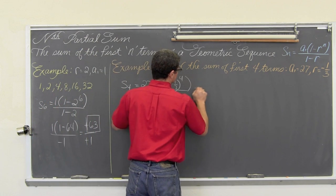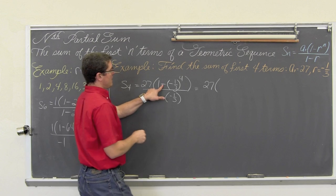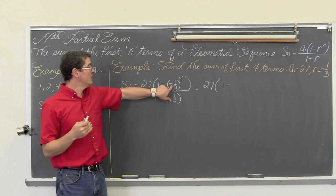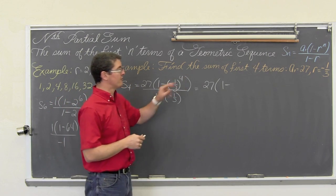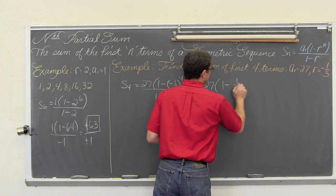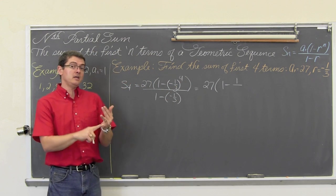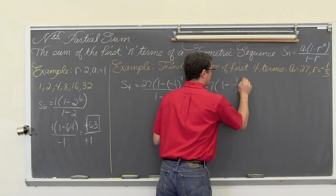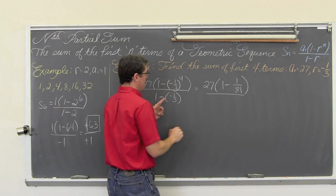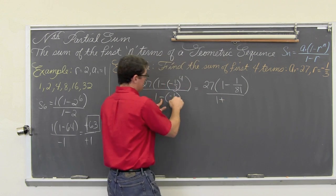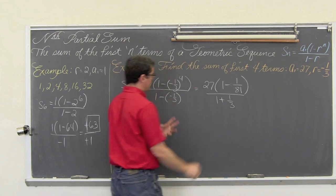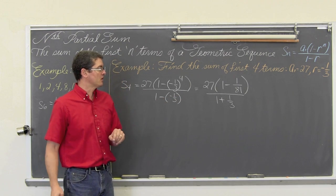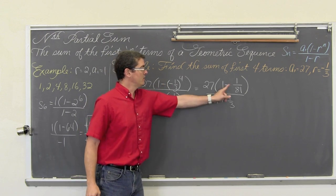So we are going to have 27, over 1 minus, I am not going to cancel out those negatives because I have to do my exponent first. So we have 1 to the fourth, which of course is 1, and then 3 to the fourth is 81, over 1 plus 1 third. Now here I can do negative times negative equals positive because I am not applying some kind of exponent that I have to do first. And note, if you had cancelled these out, you would have a sign error.